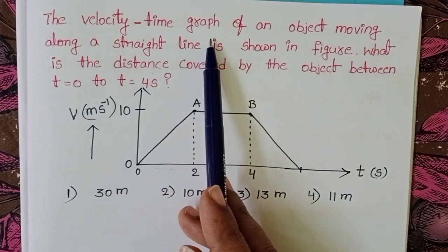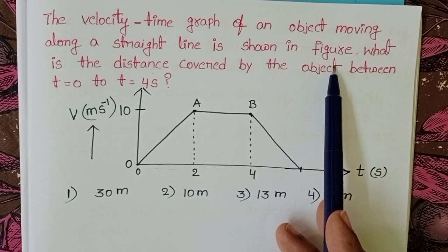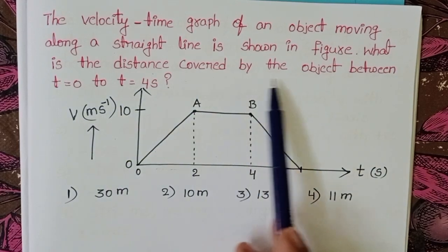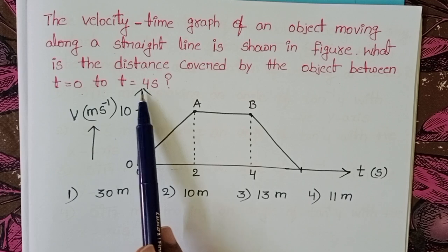The velocity-time graph of an object moving along a straight line is shown in the figure. What is the distance covered by the object between time equals 0 to 4 seconds?